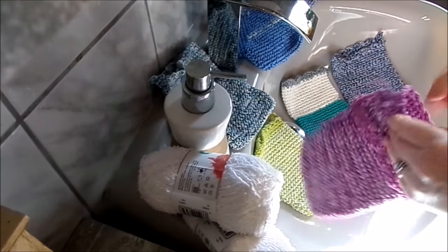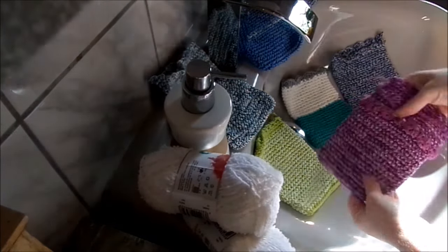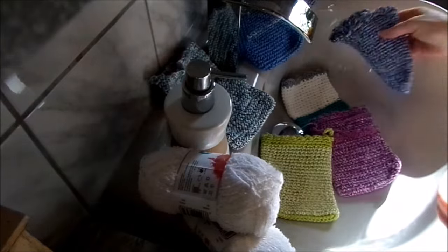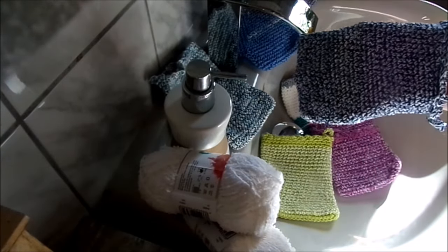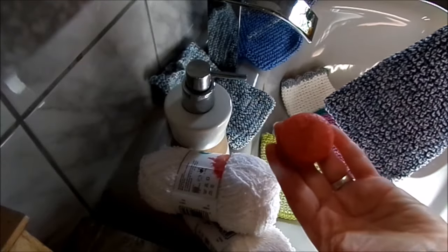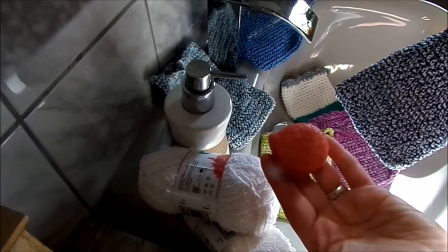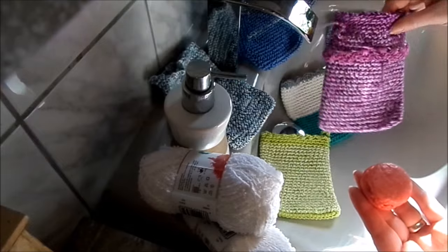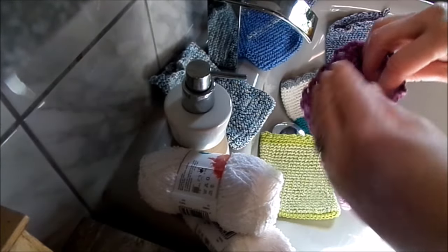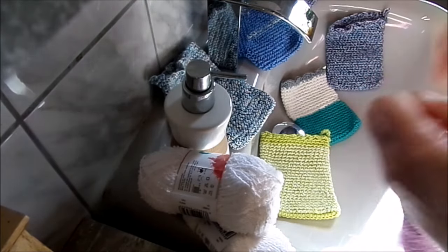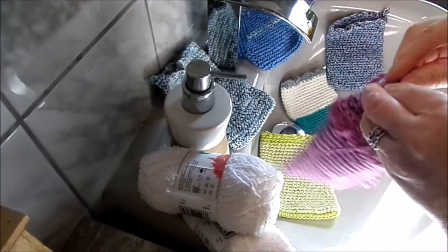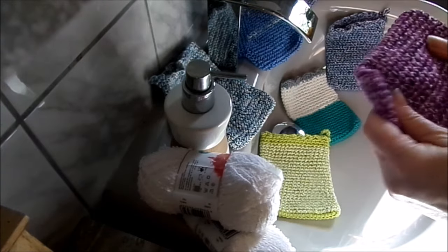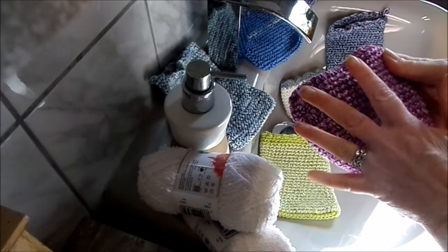Und zwar tolle Handwaschlappen, Handschuhe, die besonders toll sind, auch für feste Seife, Shampoo. Einfach gemacht, simpel gemacht, in verschiedenen Musternfarben, praktisches. Wie zum Beispiel, man könnte das Feste in den Waschlappen reinwerfen, zuziehen, Schlaufe zubinden, feucht machen. Dann schäumt das auf und dann kann man sich wirklich ganz toll einreiben oder den Schaum zum Haarewaschen nehmen.